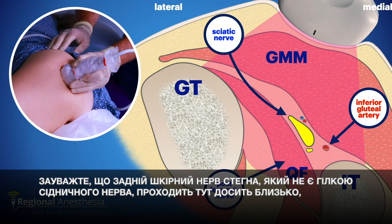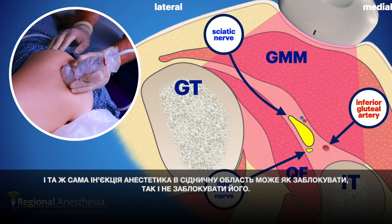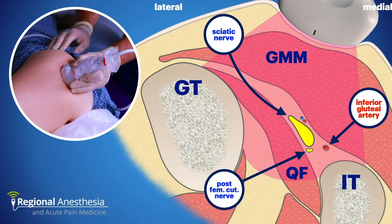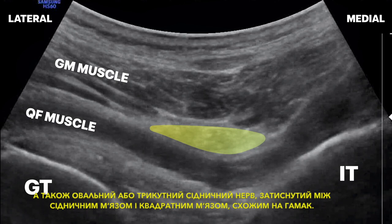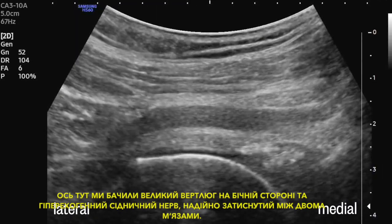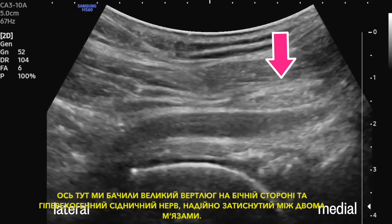Note that the posterior cutaneous nerve of the thigh, which is not a branch of the sciatic, runs quite close here and may or may not be blocked with the same sciatic injection — we'll talk more about that later. Here's what our sonogram looks like: we see the hyperechoic bony prominences on either side, and the oval or triangular sciatic nerve sandwiched between the gluteus and the hammock-like quadratus.